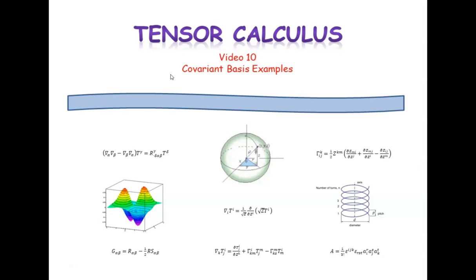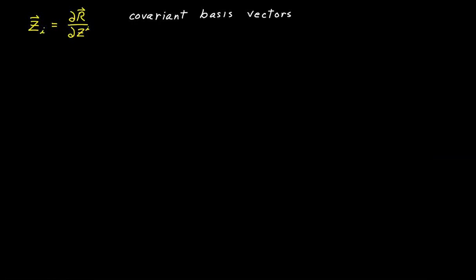This is video 10 in our series on tensor calculus. In this video, I'm going to follow up our last two videos with some examples of what covariant basis vectors look like. In the last video, we developed this definition for the covariant basis vectors: they're the set of partial derivatives of our position vector with respect to each of our coordinate variables.